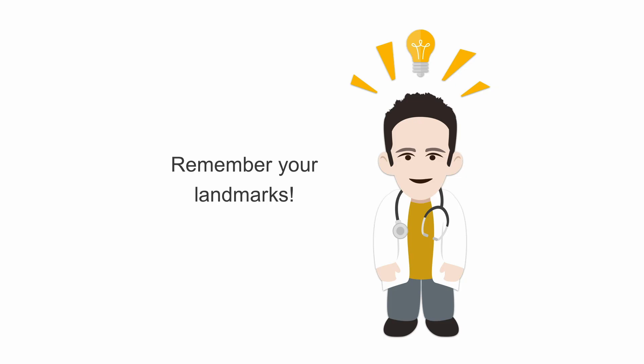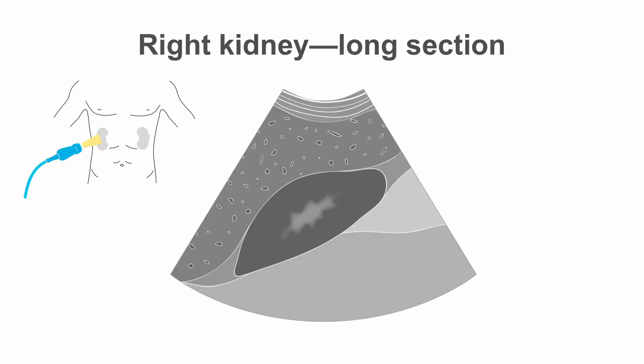There are two important structures to look for when trying to find the kidney. First of all, we will look to find the right kidney in long section. For that, we will look for the Morrison pouch.